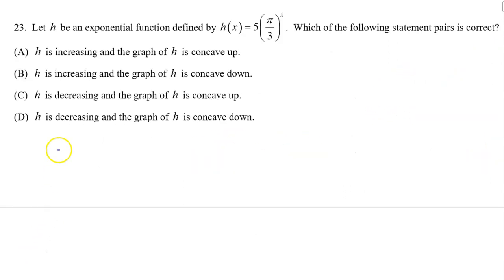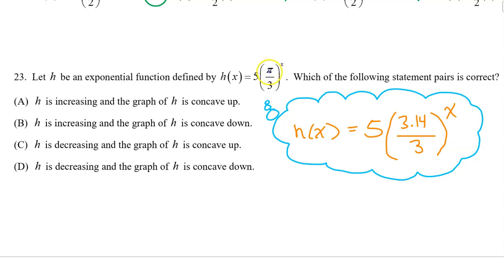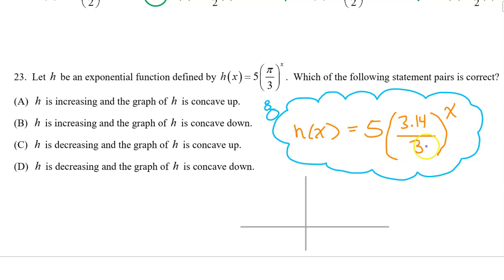Number twenty-three: let h be an exponential function defined by h of x equals 5 times pi over 3 to the x power. Which of the following statement pairs is correct? Remember that pi is approximately 3.14, so pi over 3 is approximately 3.14 over 3, which is a little bit bigger than one. The positive a value means the curve will be above the x-axis, and the b value slightly greater than one means h of x is an exponential growth curve. So the answer is A: from left to right, h is increasing and concave up.